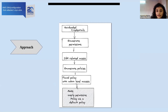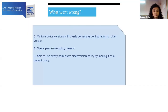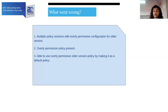Whether from an external attacker who found hardcoded credentials, or an internal threat actor, the flow is: you find IAM-related access, enumerate policies, discover one with admin-level access, and make it the default. What went wrong? Multiple policy versions with overly permissive configuration for older versions — like v2, v3, v4 — that were created long ago but never removed. The attacker is able to make that overly permissive policy the default, causing privilege escalation for both internal and external threats.